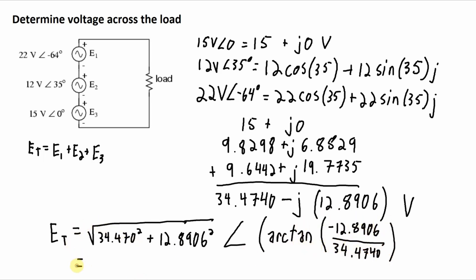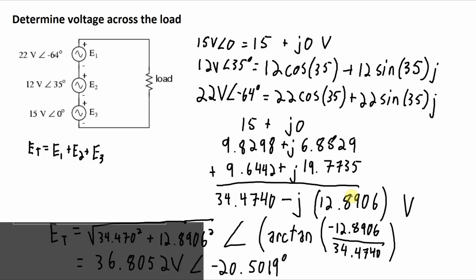Plug those numbers into a calculator. And I get 36.8052 volts with a phase angle of negative 20.5019 degrees. And that's it. That's all I wanted to do here.